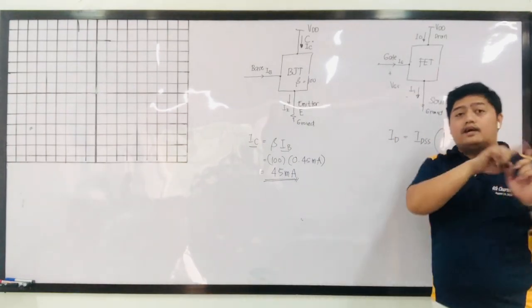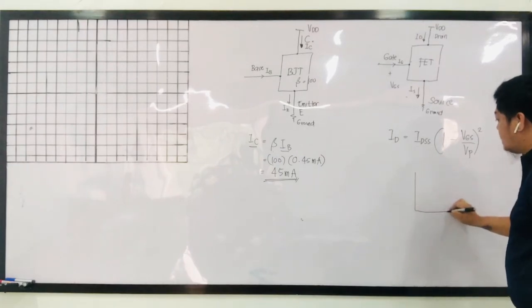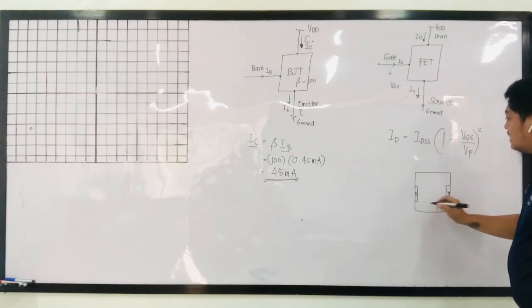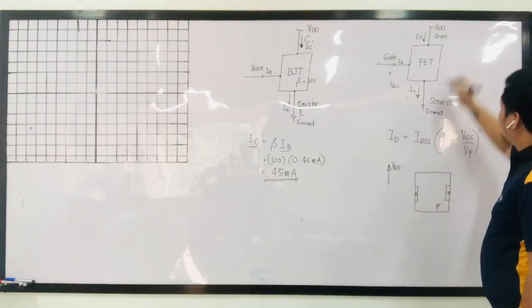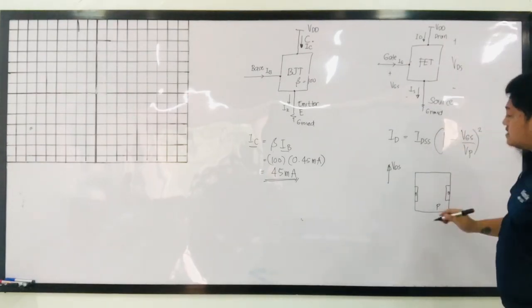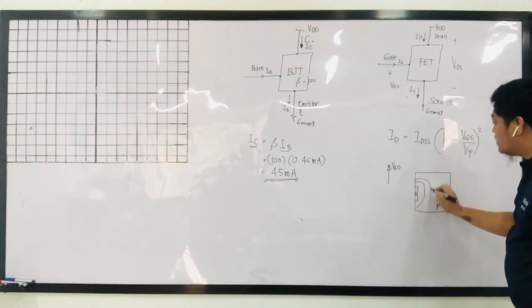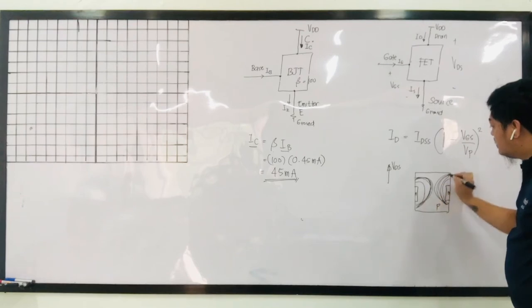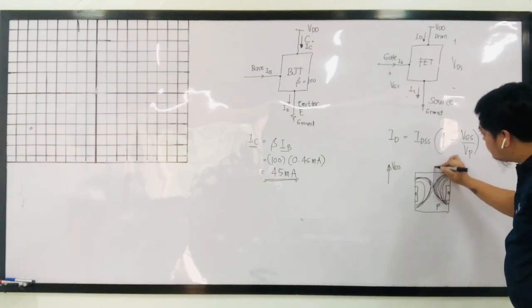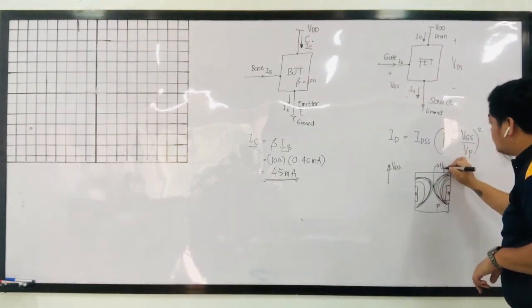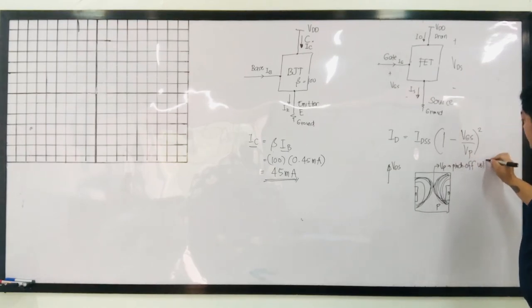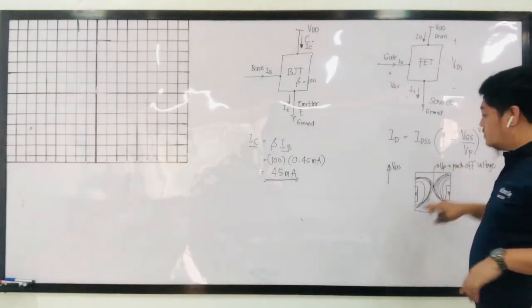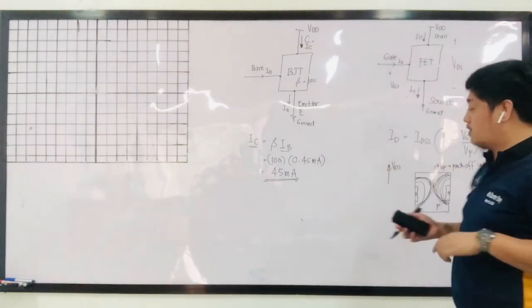What is pinch-off voltage? It is discussed in the YouTube link I gave you, but for a quick recap: you have your FET with your N-channel and your P region. As you increase your VDS — the voltage from your drain to your source — the ohmic region here also increases, and the current also increases. The point where the regions are almost touching is what you call your VP, or pinch-off voltage. Most common pinch-off voltages are already given in our problem sets.